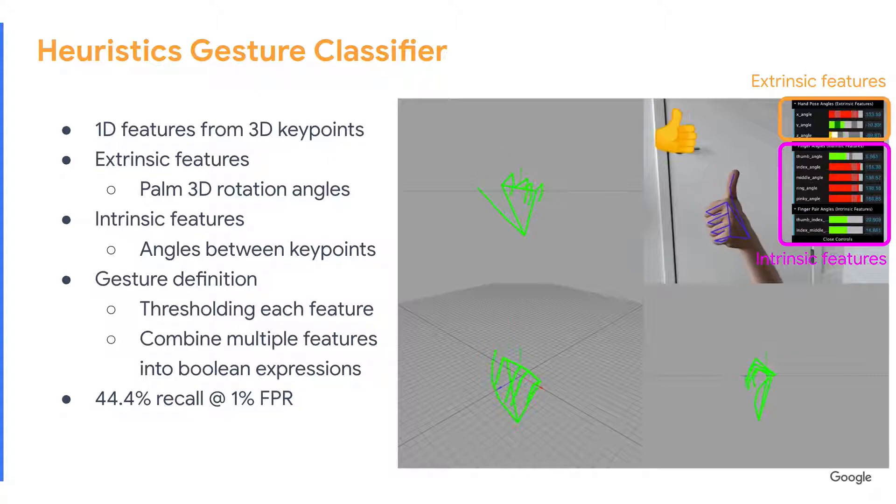We developed a classifier using heuristics based on weakly correlated features from 3D key points and pose of the hand skeleton model. On an in-house dataset of 1.9k video clips, this classifier has about 45% recall at 1% FPR.